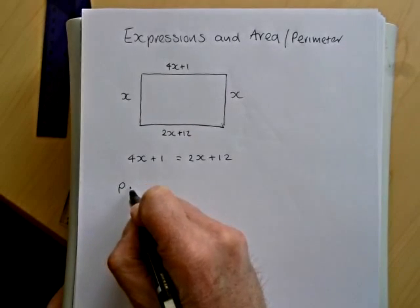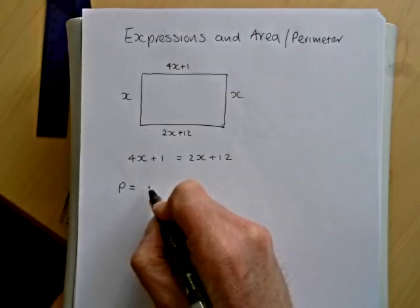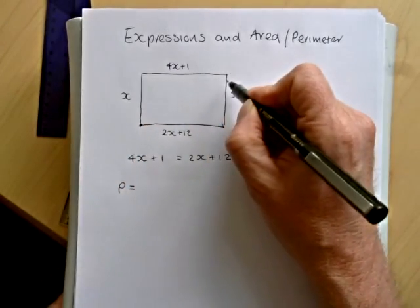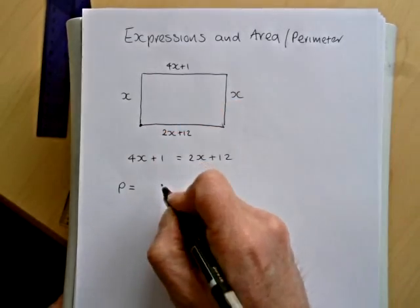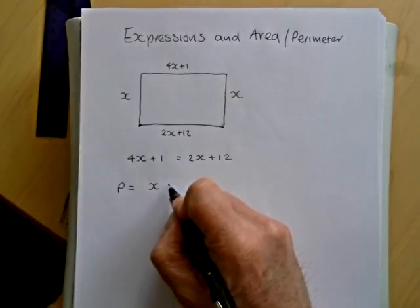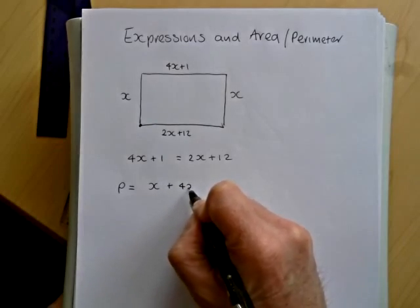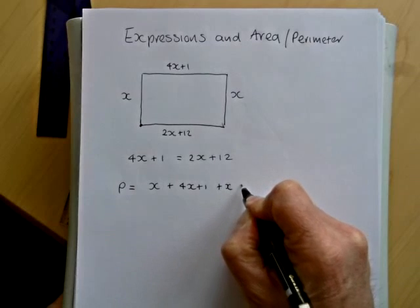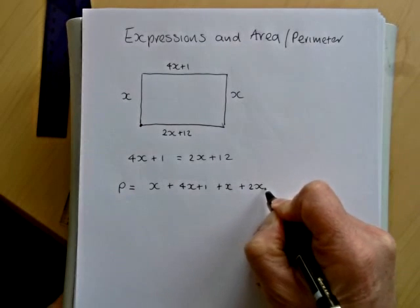Equally we can form a formula for our perimeter. A perimeter is the distance all the way round the shape. So if we take our lengths as x's, we've got x plus 4x plus 1 plus another x plus 2x plus 12.